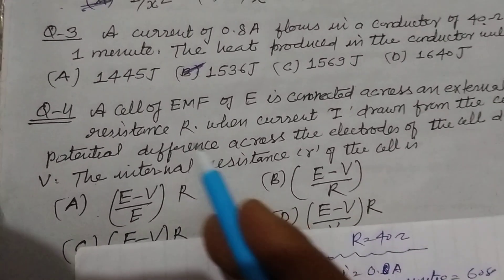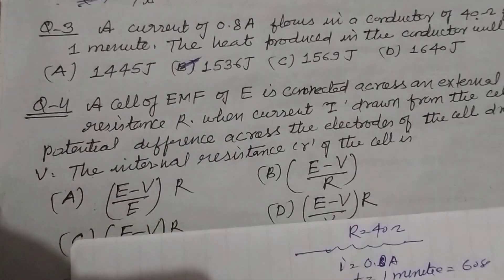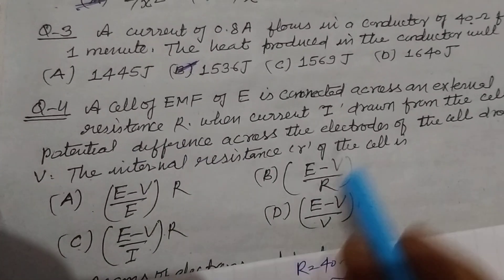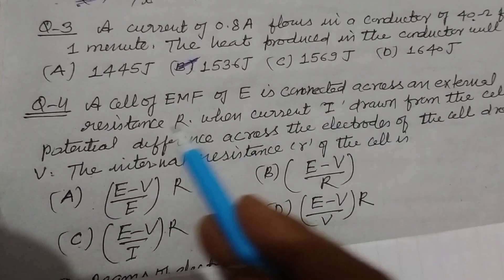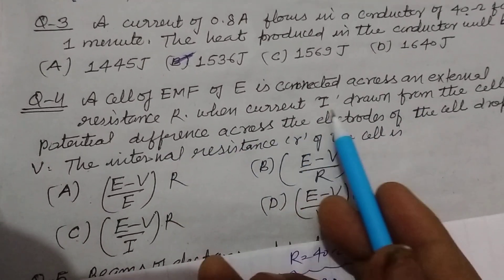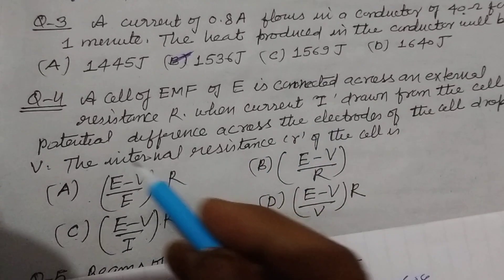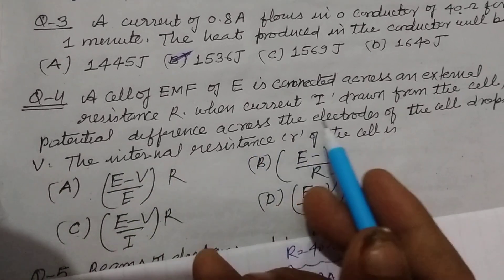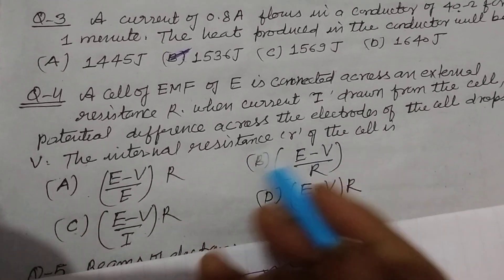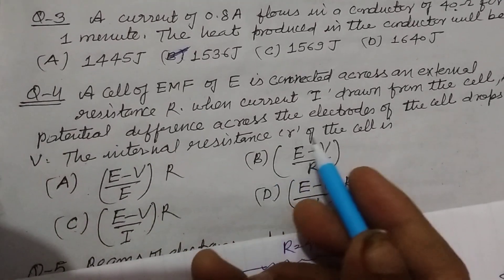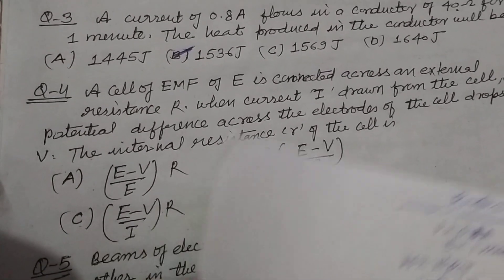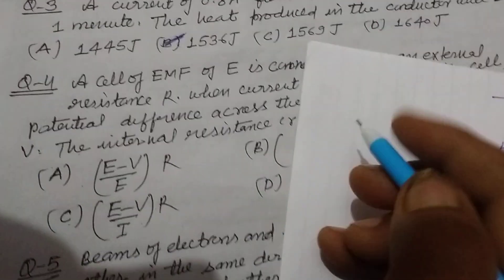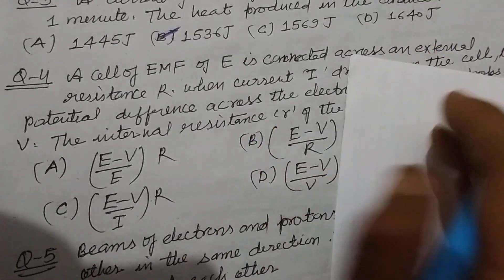Now the next question is: a cell of EMF E is connected across an external resistance R. When current I is drawn from the cell, the potential difference across the electrode of the cell drops to V. The internal resistance r of the cell?